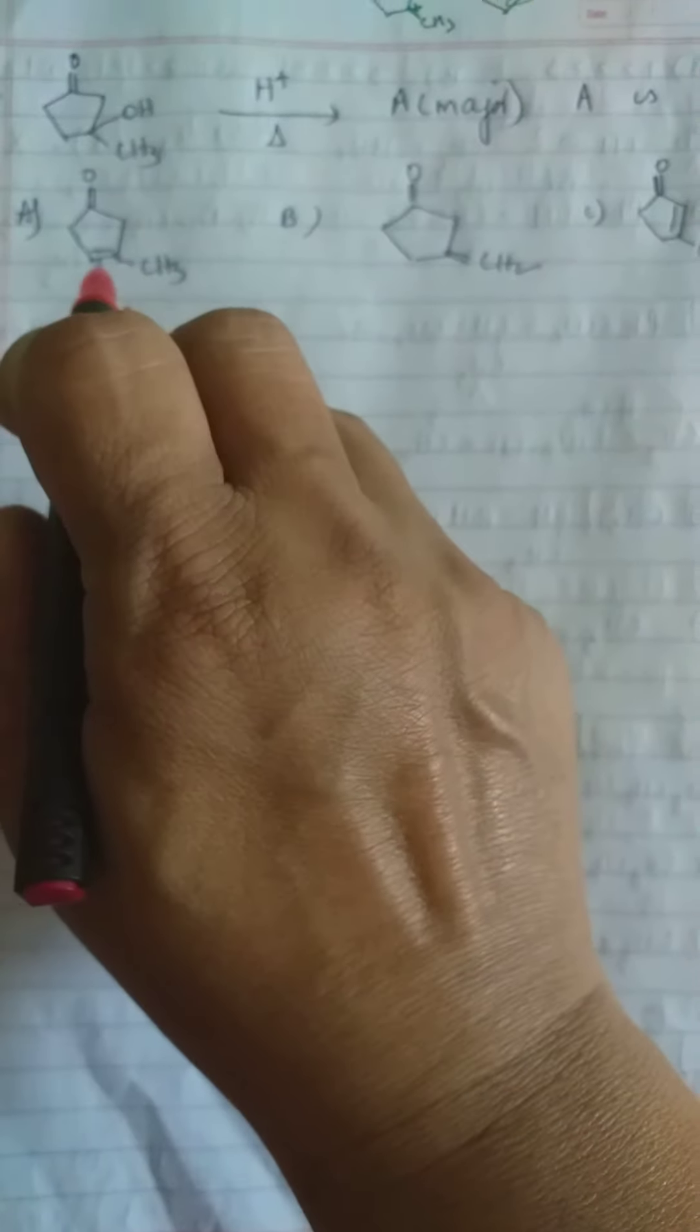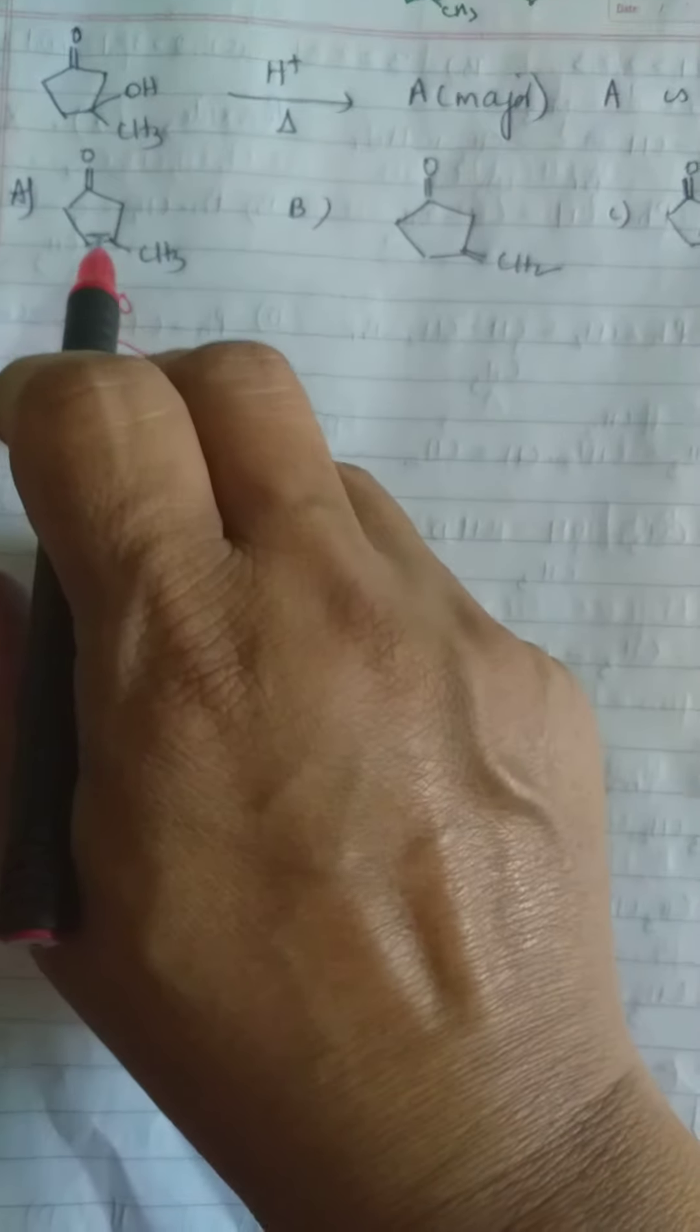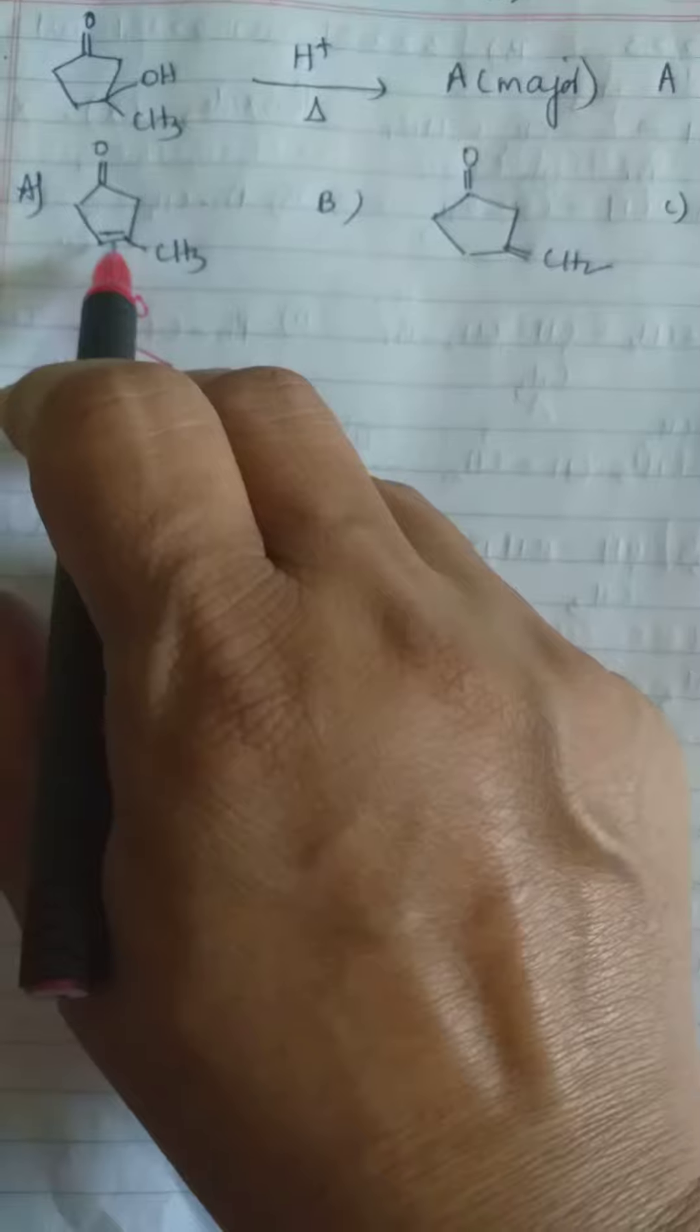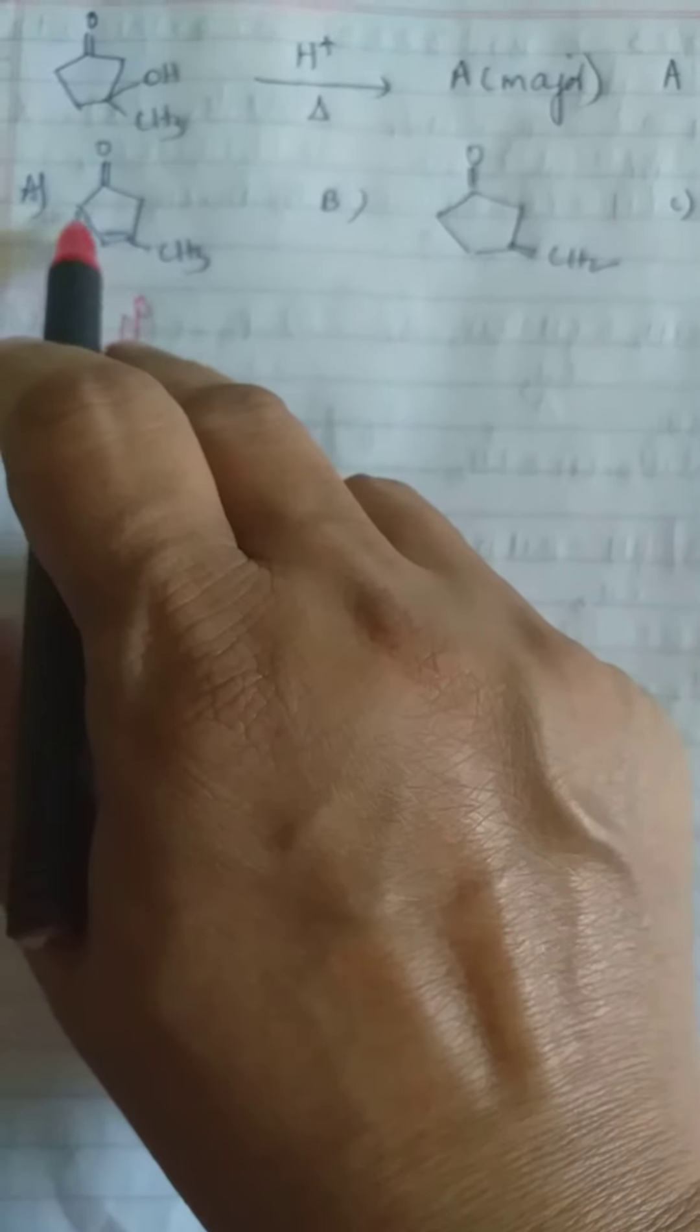That is a fairly stable alkene which is formed. Why? How many hyperconjugative structures can you count? 3 plus 2 equals 5, plus 2 equals 7 conjugative structures. This is not much of a possibility.